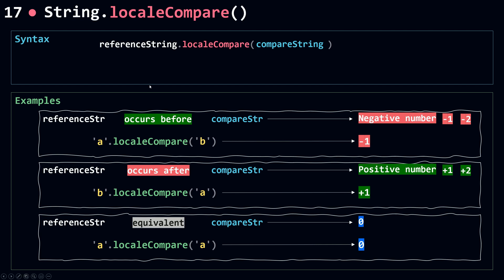How do I remember this? Think about these as numbers. For example, one comes before two. If I do one minus two, this returns a negative number. But if it's two minus one — two occurs after one — that gives a positive number. That's how I remember how localeCompare works.